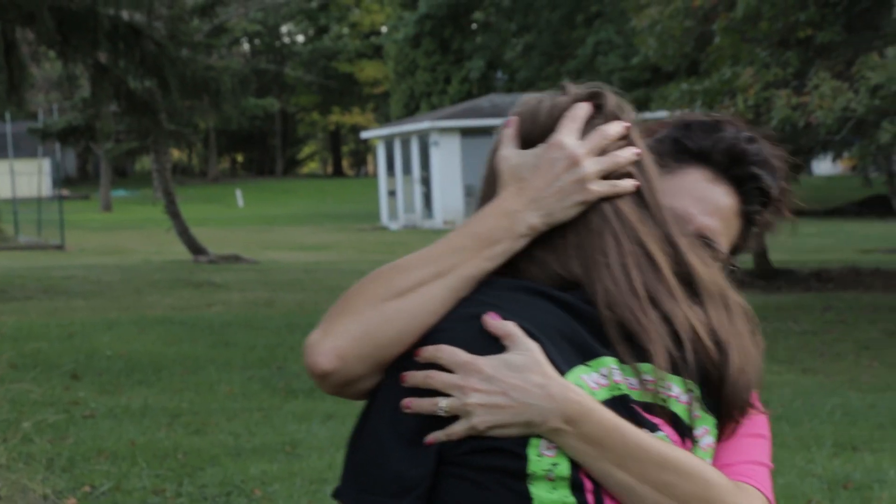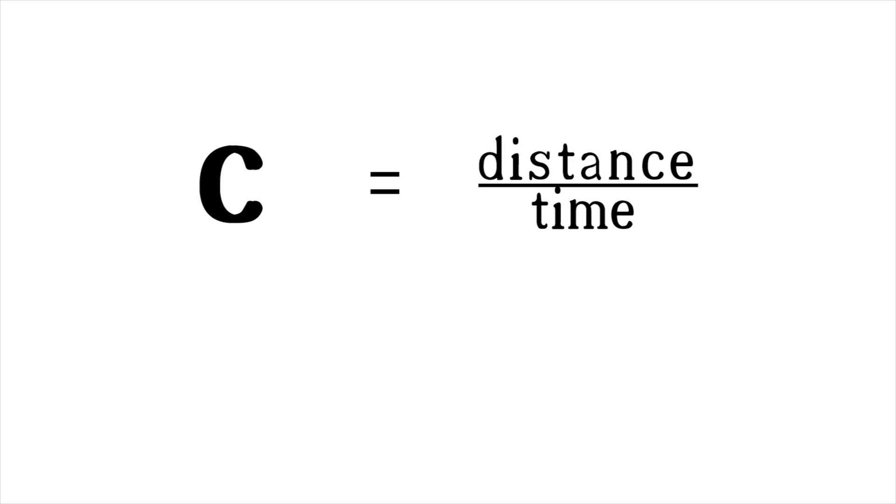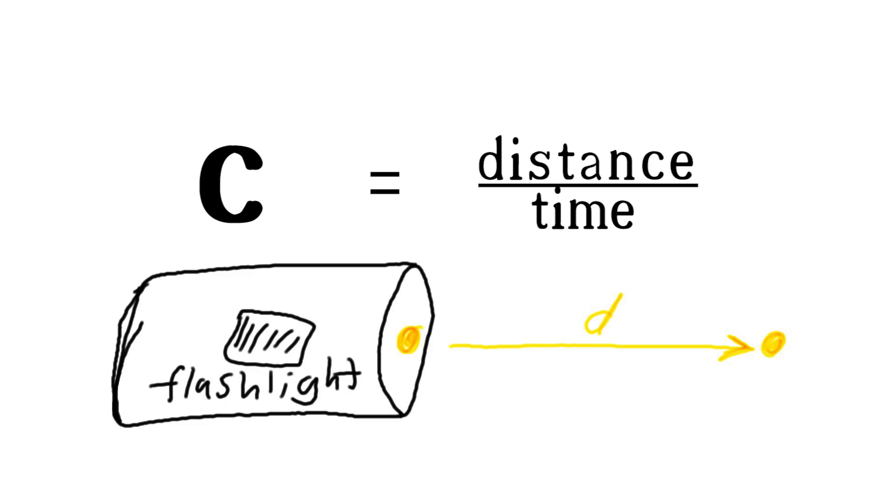It's all based on the equation speed equals distance over time. When we use this equation to describe light, the speed of light is constant, as long as you are measuring it from a reference frame moving at a constant velocity, such as Earth. The distance in this equation has to be the distance traveled by light, but that doesn't mean we can't use it to describe any matter in the universe.